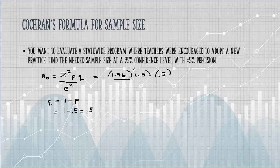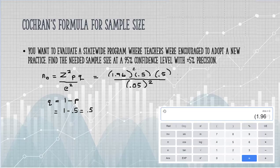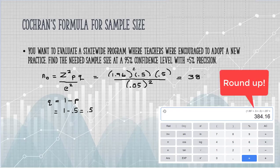The precision level is given in the question as 5%, that's 0.05, and that's going to be squared. When I work this out on the calculator, I get 385.